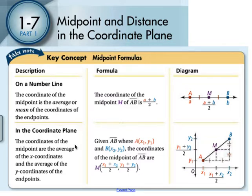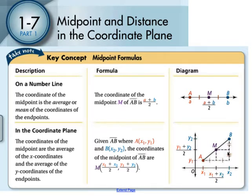You do the same thing twice in the coordinate plane. Every point has two coordinates — an x-coordinate and a y-coordinate. So we're going to find the average of the x-coordinates and the average of the y-coordinates to find the midpoint of the segment in the xy plane.